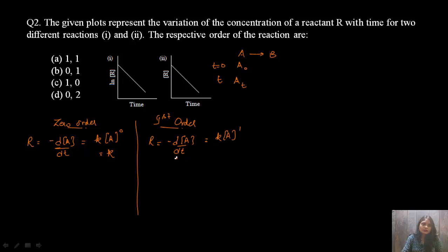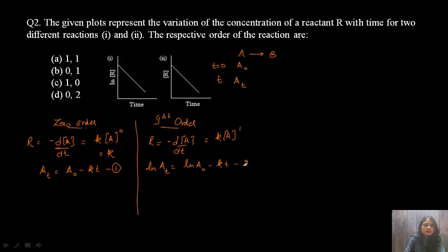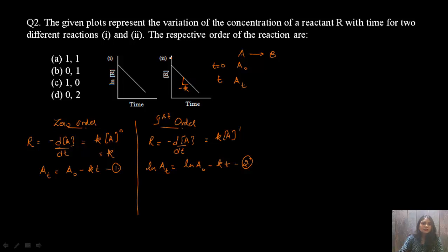For zero order: Aₜ = A₀ − Kt (Equation 1). For first order: ln[Aₜ] = ln[A₀] − Kt (Equation 2). From Equation 1, if we plot concentration on the y-axis and time on the x-axis, we get a straight line with slope −K. So a linear graph of concentration versus time indicates a zero order reaction. Only option C contains zero order for the second reaction.